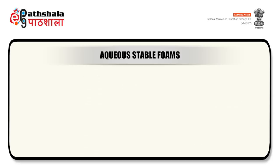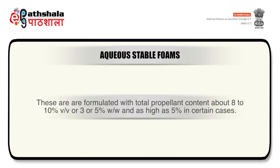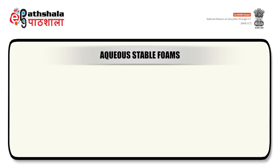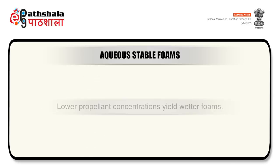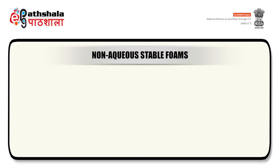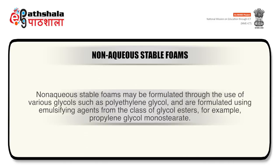Aqueous stable foams are formulated with total propellant content about 8 to 10% v/v or 3 to 5% w/w. As the amount of propellant A70, A46, etc. increases, a stiffer and drier foam is produced; lower propellant concentrations yield better foams. Non-aqueous stable foams may be formulated through the use of various glycols like polyethylene glycol and are formulated using emulsifying agents from the class of glycol esters, for example propylene glycol monostearate. Various medicinal agents can also be incorporated into this base.